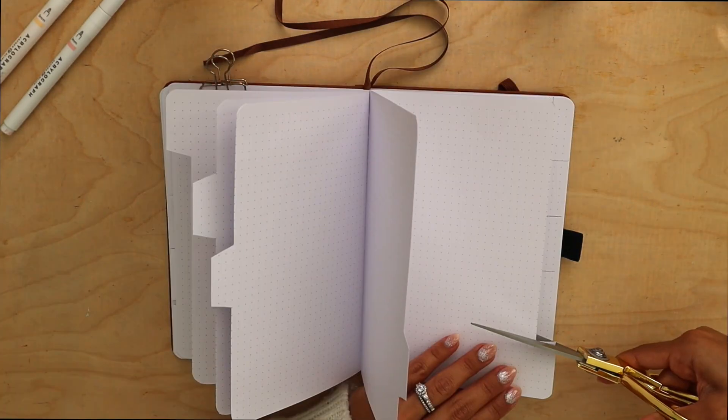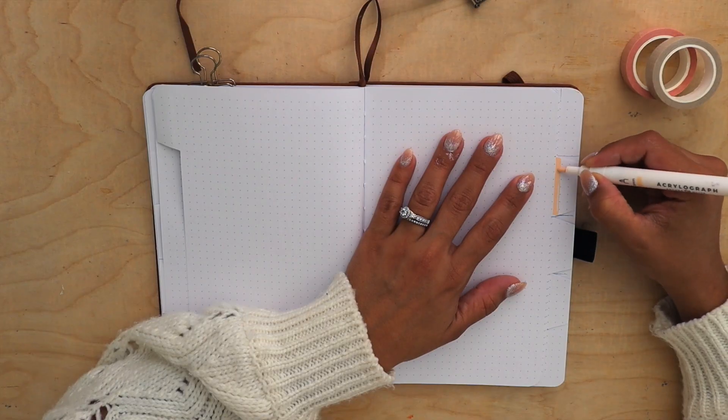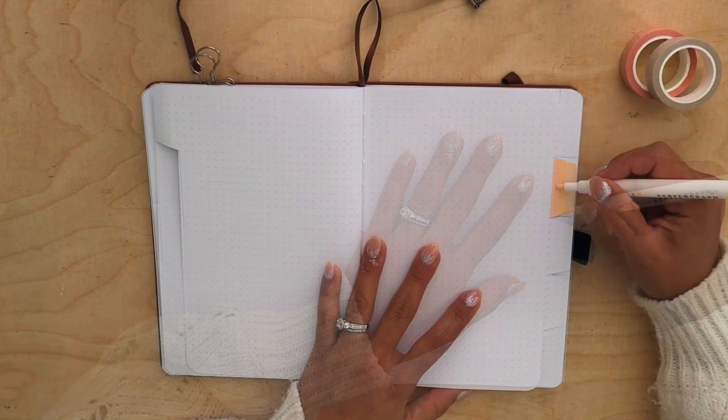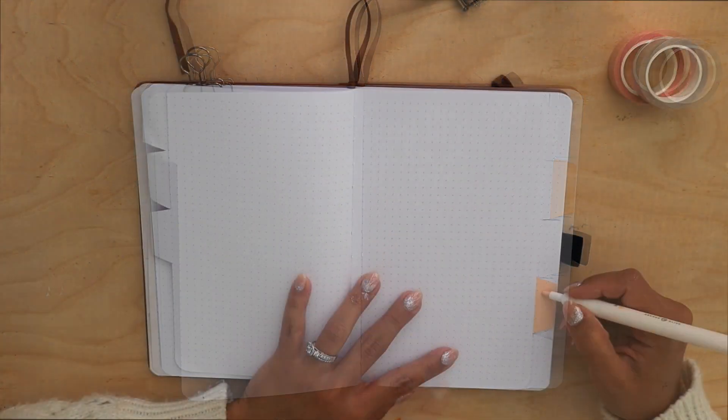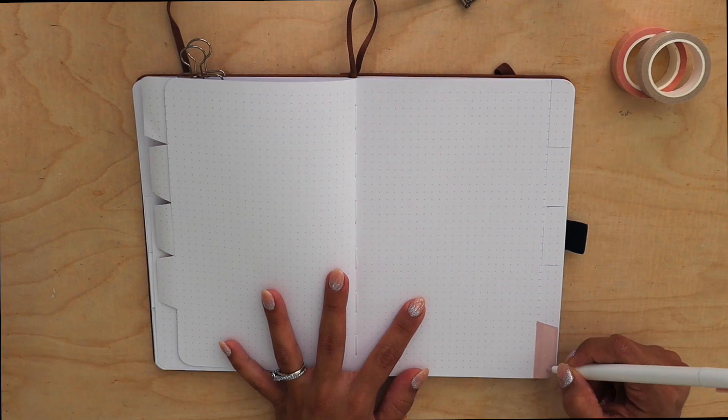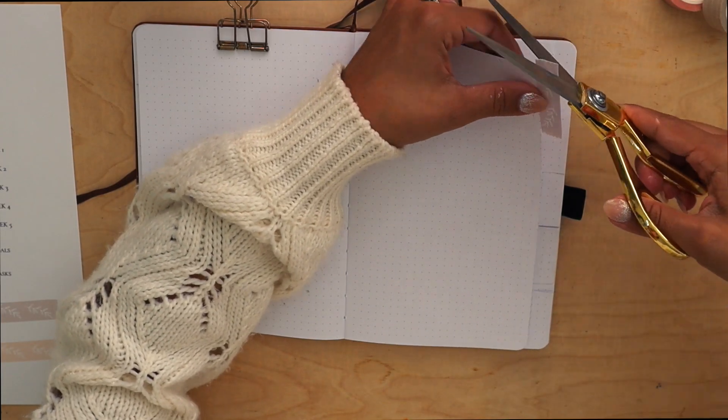So the next step is going to be decorating. You want to make sure the tabs stand out so you can easily spot them and easily find the spreads you're looking for. Paint markers, washi tape, or watercolor work great for this step.